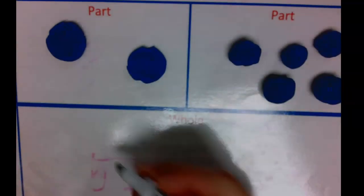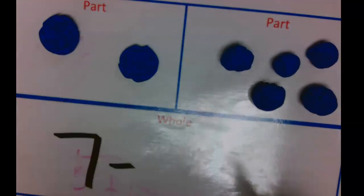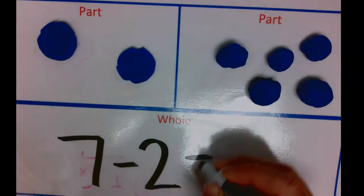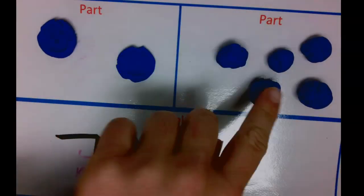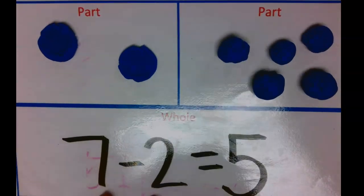Now let's construct our number sentence. Seven minus, we smashed one, two pieces of play-doh, has a difference of one, two, three, four, five. So in turn, seven minus two equals five.